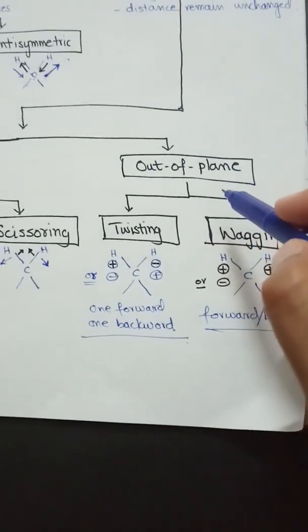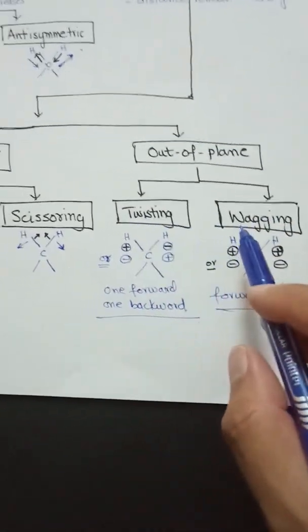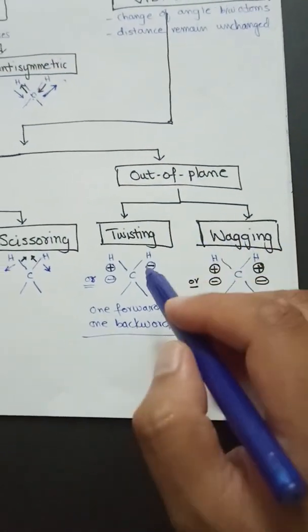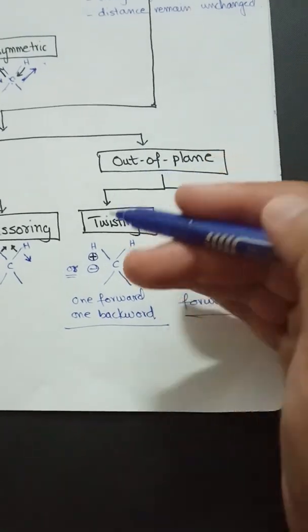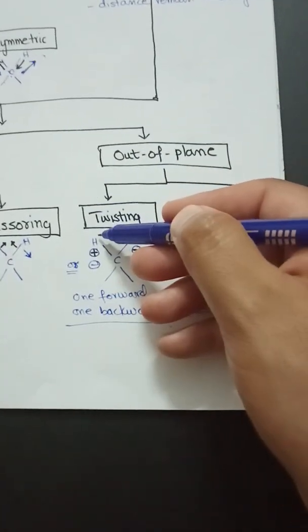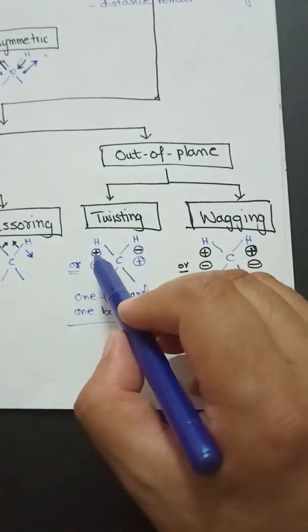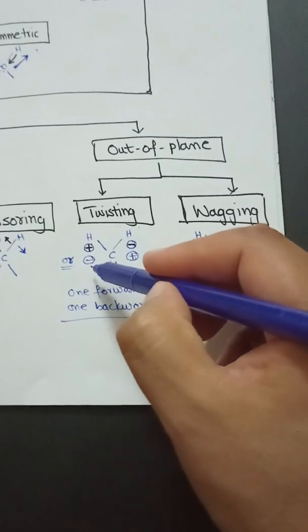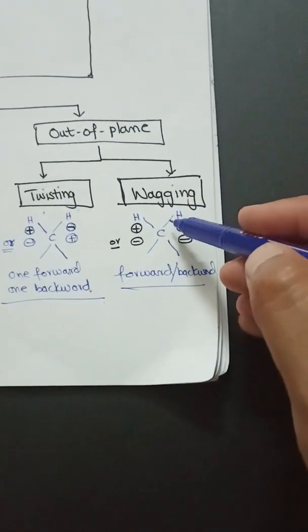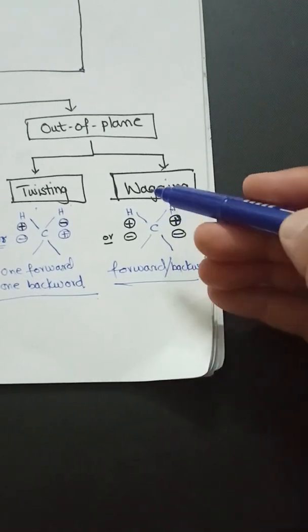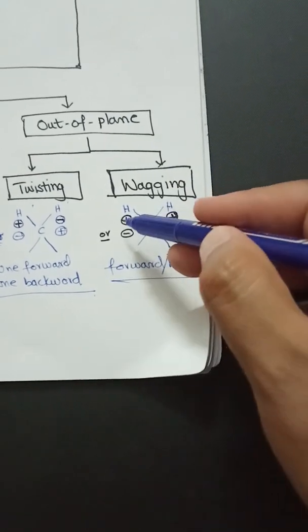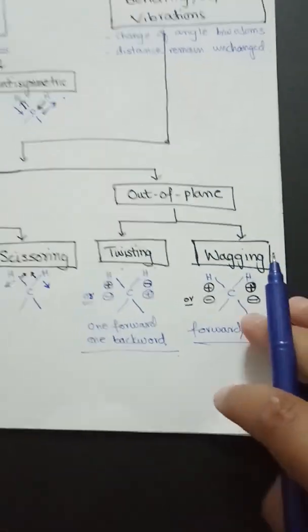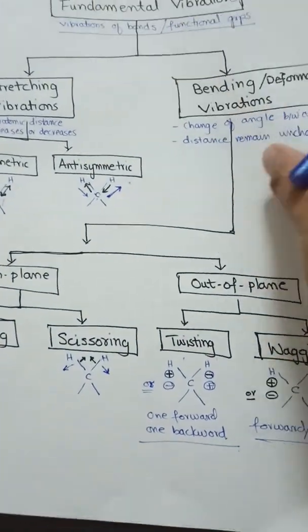Out-of-plane bending vibrations are of two types: twisting and wagging. So in total we have four bending vibrations: rocking, scissoring, twisting, and wagging. In twisting, one bond comes forward while the other goes backward. In wagging, both atoms simultaneously come forward and then go backward — a plus sign represents coming forward and a minus sign represents going backward.